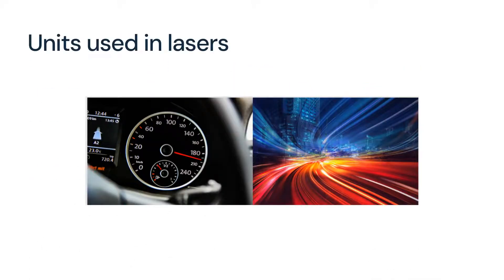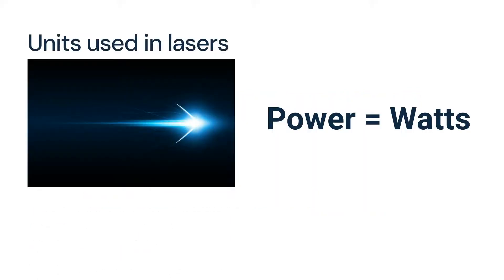Units used in lasers: The first unit is power, usually measured in watts (W) or milliwatts (mW). The power of a laser refers to the rate at which it delivers energy. Higher power lasers can cut or engrave materials and are used in industrial and surgical applications, while lower power lasers are often used in applications like laser pointers or optical transmission.